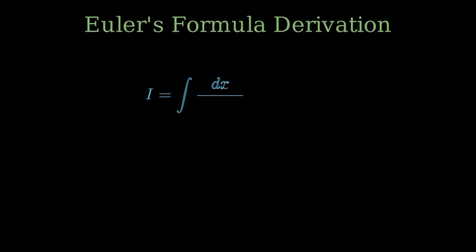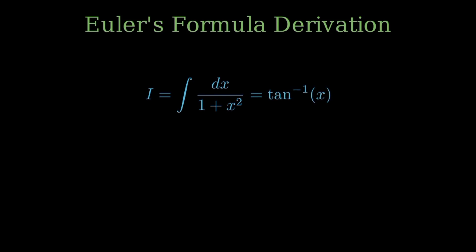We start with the integral of 1 over 1 plus x squared. That integral equals arctangent of x from basic calculus. Now we can also write it as 1 over i multiplied by the integral of i dx over 1 minus ix squared.